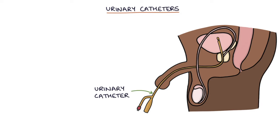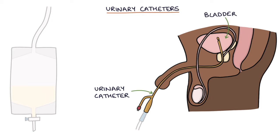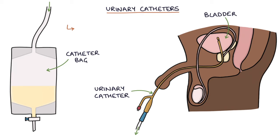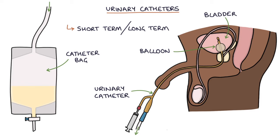Urinary catheters are tubes that are inserted into the bladder to passively drain urine. Urine drains through the tube into a catheter bag, and urinary catheters may be used short-term or long-term depending on the indication. When left in the bladder, a balloon on the end of the catheter is inflated inside the bladder with sterile water, usually about 10 milliliters, preventing the catheter from falling out.